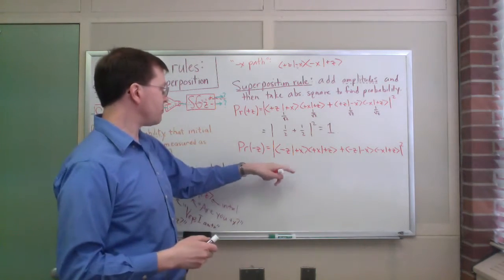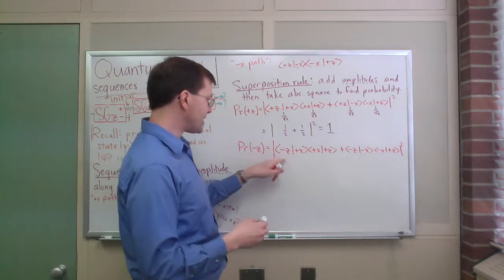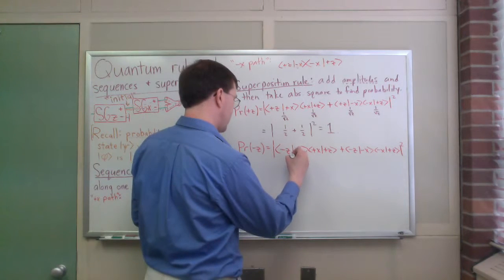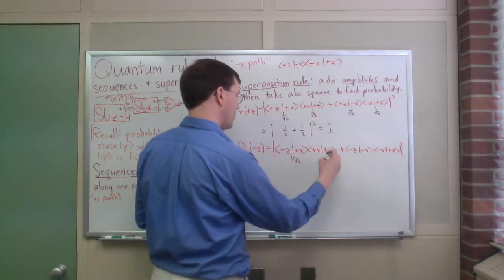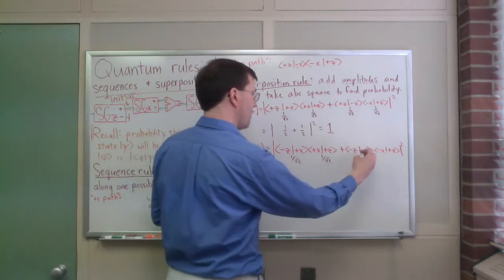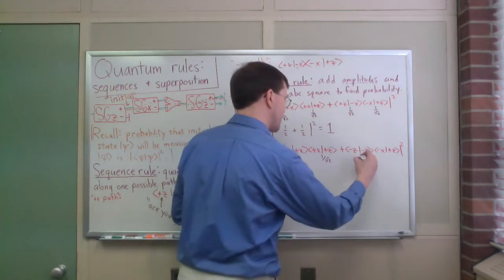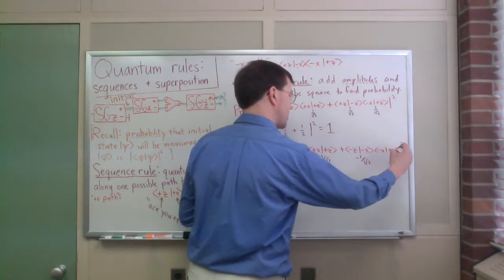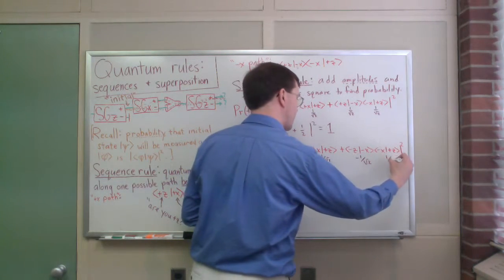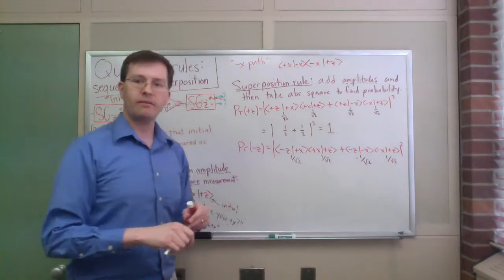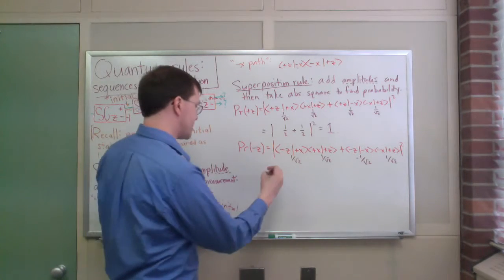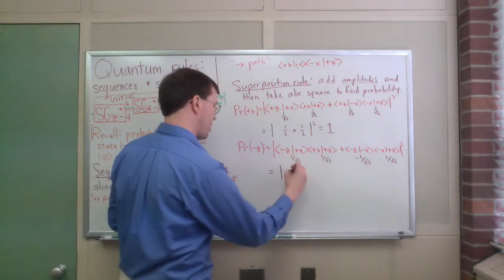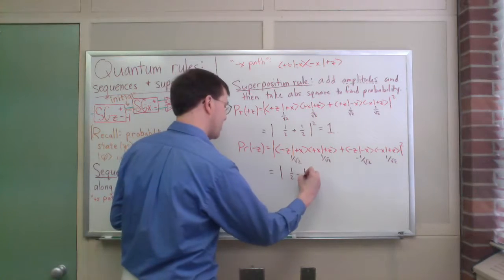So, okay, now I can put it all together. Minus z with plus x, I happen to know, is 1 over the square root of 2. And this is still 1 over the square root of 2. Minus z with minus x, this is the interesting one. This is minus 1 over the square root of 2. And this one is, minus x with plus z is still positive 1 over the square root of 2. Those are my components.